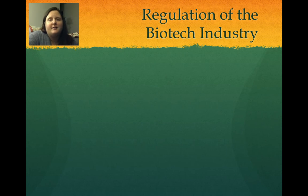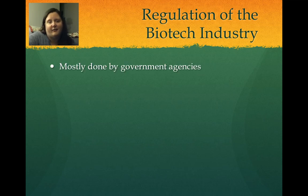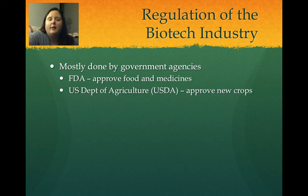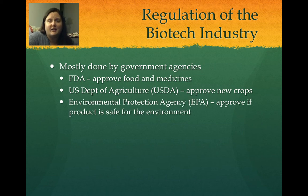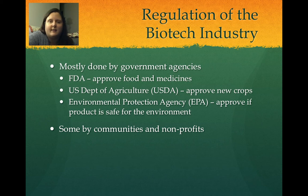With all this new technology, new animals, and genetically modified organisms, everything needs to be regulated to make sure things are safe for everyone and for the environment. Regulation is generally done by government agencies. The Food and Drug Administration approves food and medicines. The U.S. Department of Agriculture approves new crops. The Environmental Protection Agency approves whether a product is safe for the environment. Community and nonprofit groups also help with regulation by doing research and providing information.